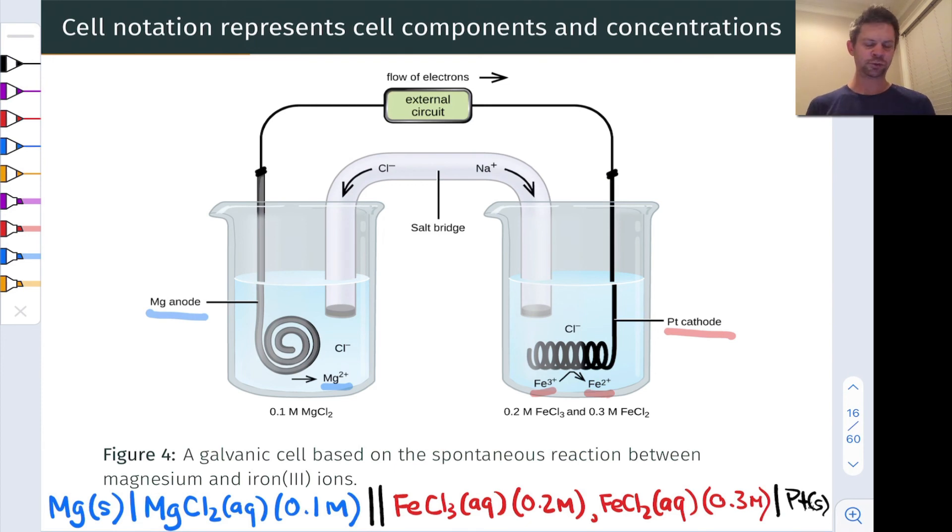This galvanic cell introduces some quirks of cell notation. We've got two components in aqueous solution, FeCl3 and FeCl2, with different concentrations listed. We've got the inert platinum electrode listed last with a vertical line, because it's in a separate phase from the redox active Fe3+ and Fe2+. Using this information in the cell notation, we could reconstruct the figure and write the half reactions. Magnesium solid becomes Mg2+ in aqueous solution, losing two electrons on the anode side. Aqueous Fe3+ undergoes reduction, picking up one electron to form reduced Fe2+ in aqueous solution.